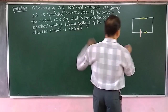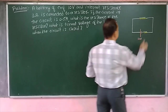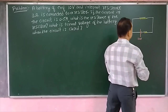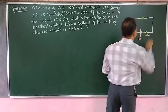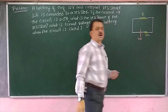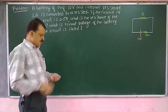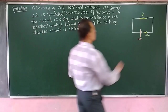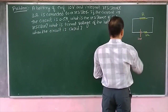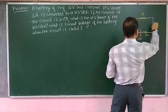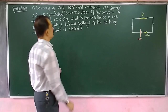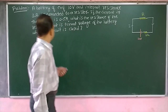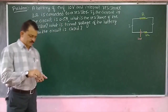A battery of EMF is given, that is 10 volts, and internal resistance is given as 3 ohms. It is connected to an external resistor capital R. We have to calculate what is the value of the external resistor. The current that flows in the circuit is given as I equals 0.5 amps.